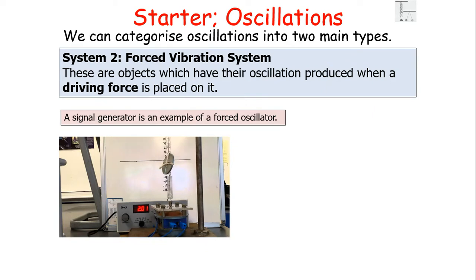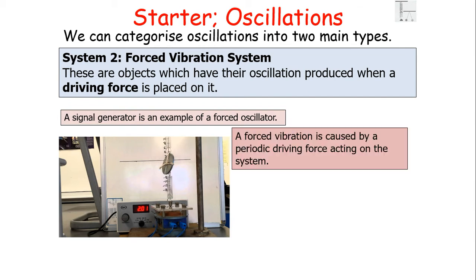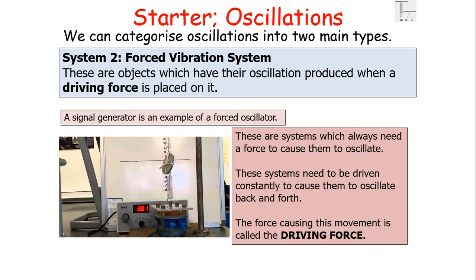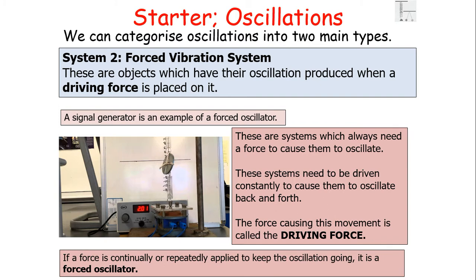The second type is a forced vibration system — objects which have oscillations produced when a driving force is placed on them. A signal generator is an example of a forced oscillator. A forced vibration is caused by a periodic driving force acting on the system, and this periodic driving force causes work to be done into the system. These systems always need a force to cause them to oscillate and must be driven constantly. The force causing this movement is called the driving force.